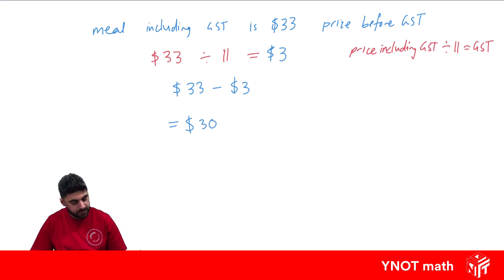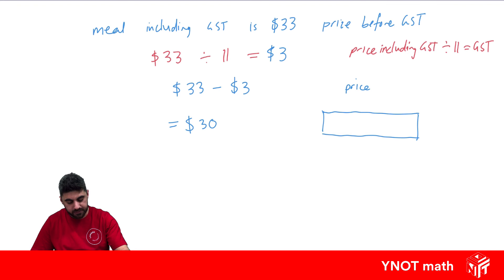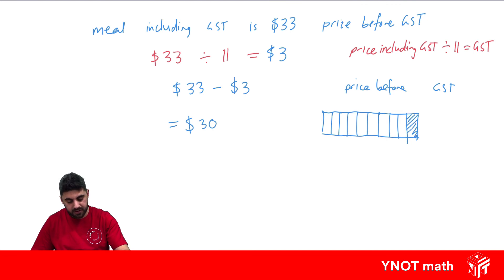You might be wondering why we divide it by 11. Let's think about it like this. If we look at a bar representing our price before GST, and GST is 10%, if we split up this bar into 10 equal pieces, then 10% of this bar is the GST. We add it onto our price, and now we have 11 equal bars including GST. So dividing it by 11 gives us one of those equal bars, which equals the GST.